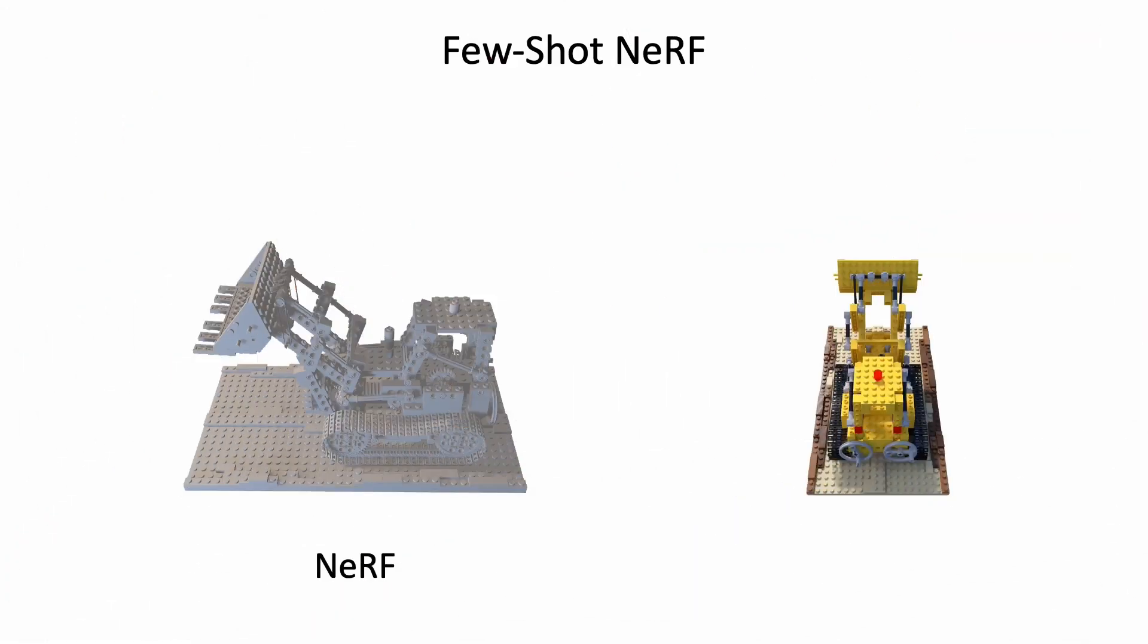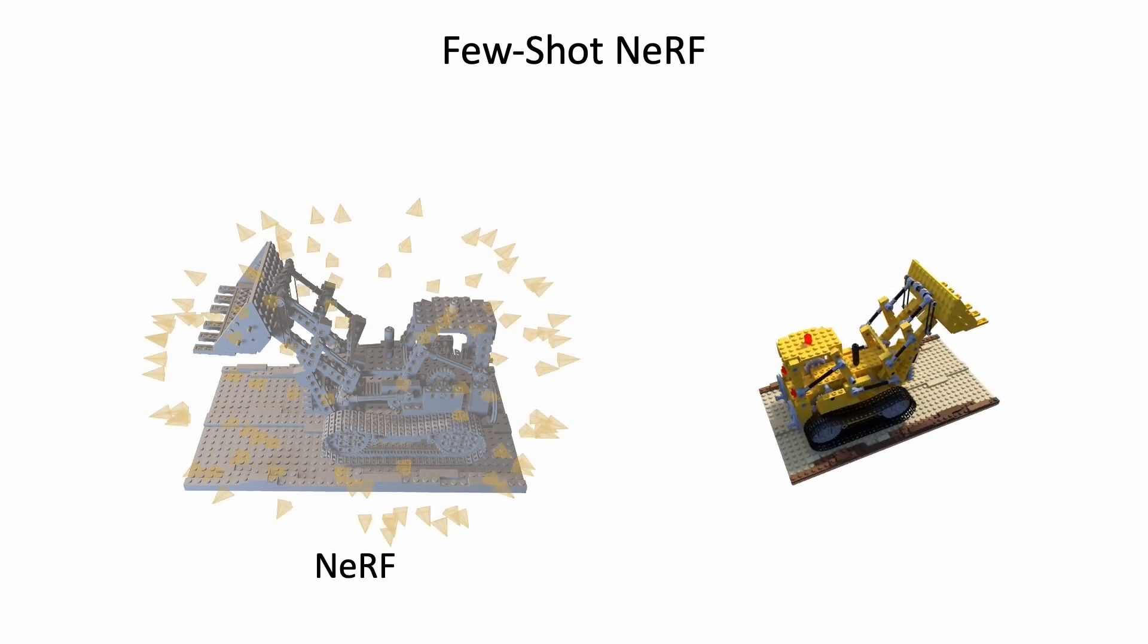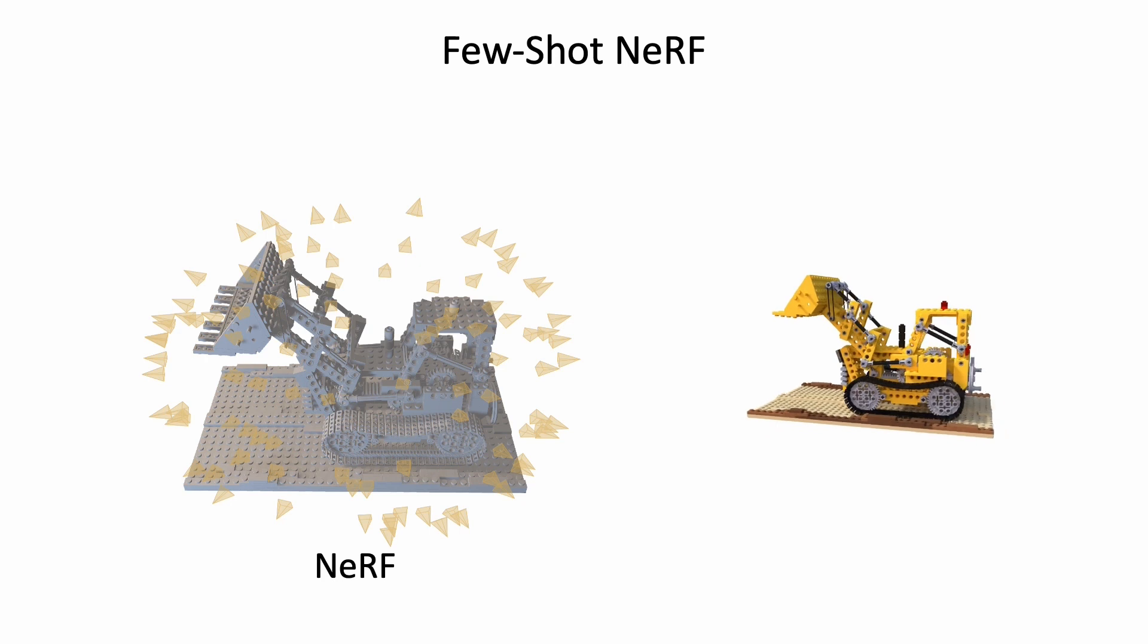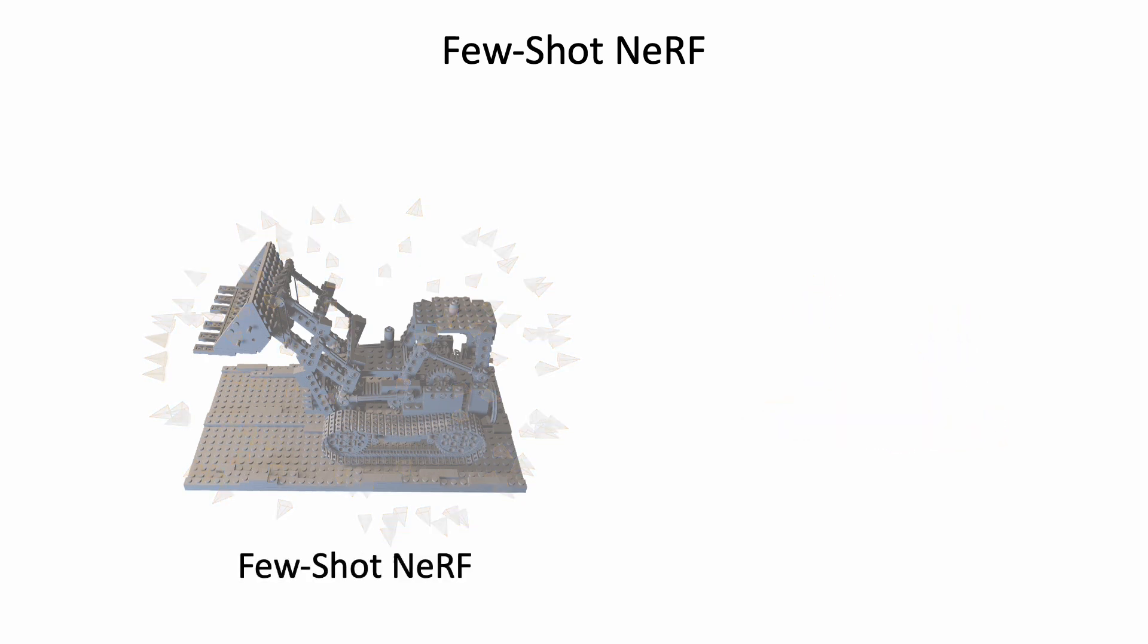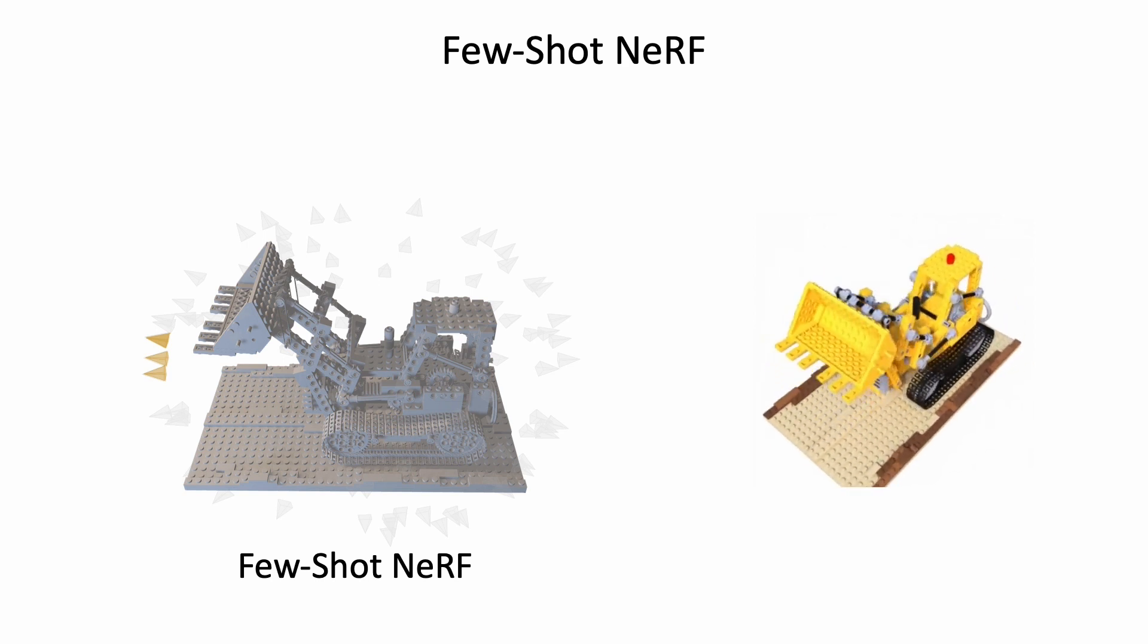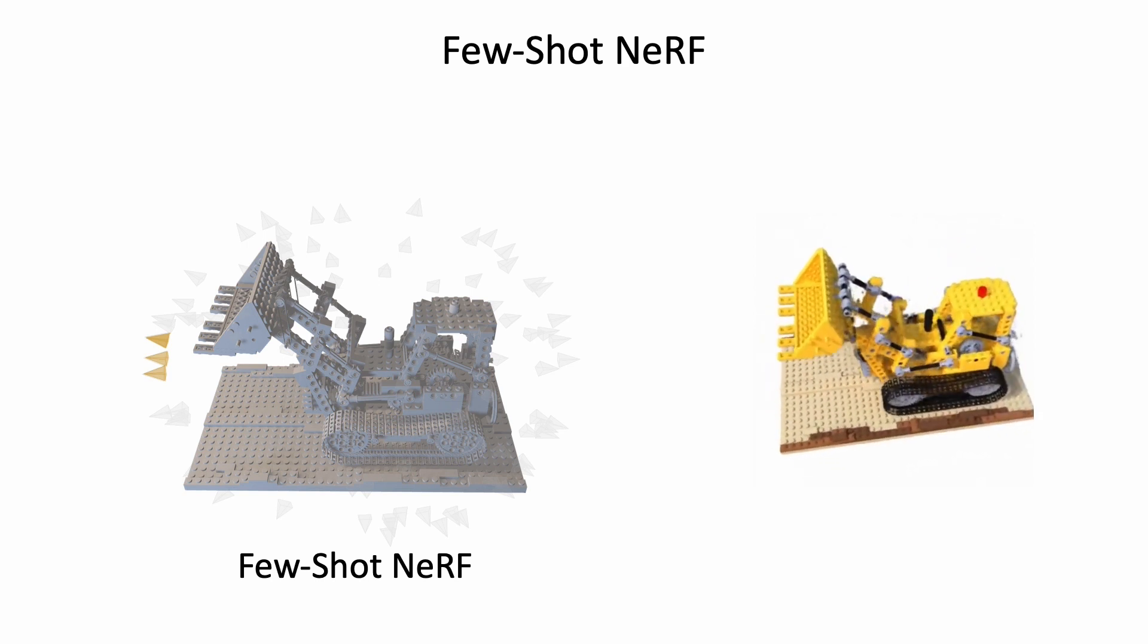The high-quality reconstruction in standard NeRF highly relies on dense captured images and per-scene optimization. To address this issue, the prior work Pixel NeRF and MVS NeRF have made progress in generalizing the reconstruction process by incorporating information from neighboring views.